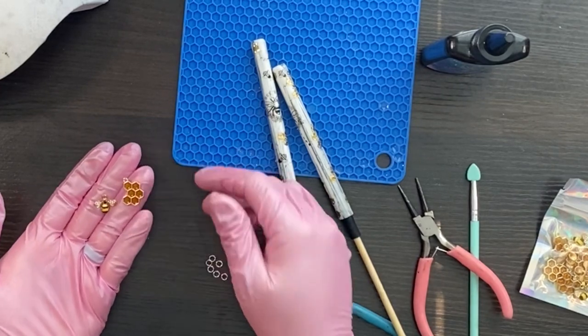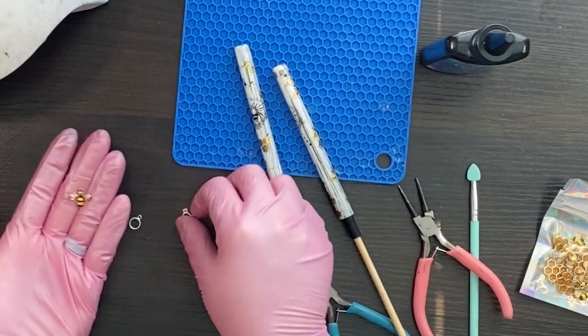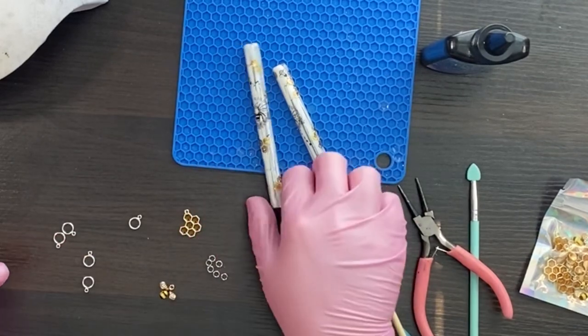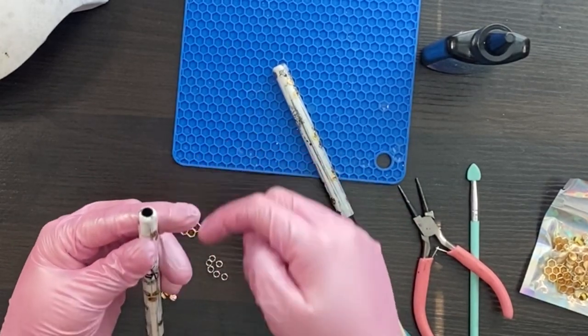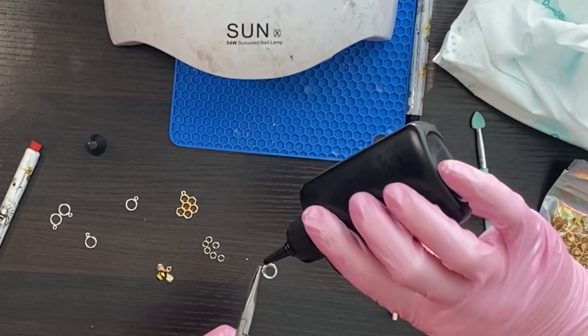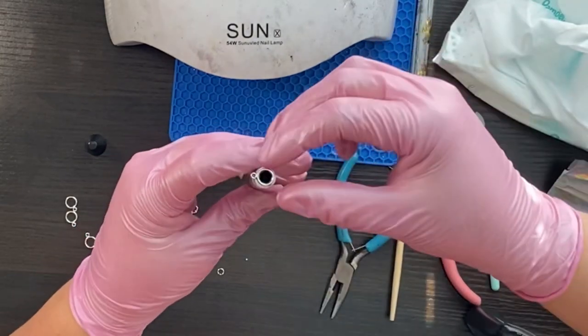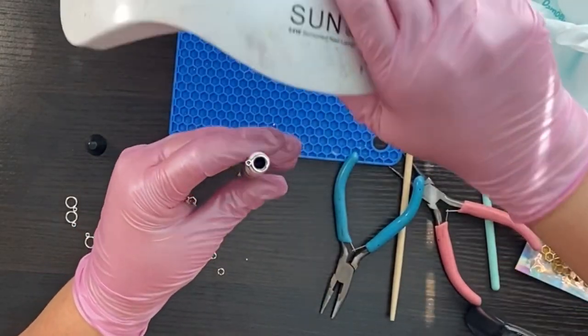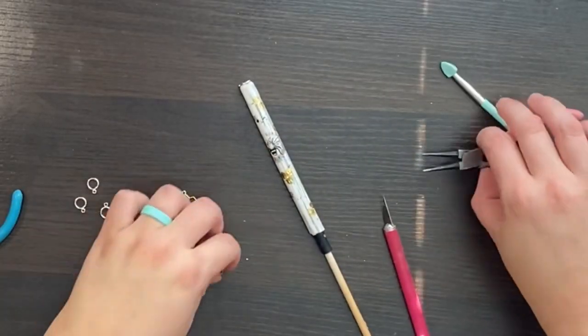I also got on Amazon these cute little honeycomb and honeybee charms. So how you get this toggle to attach to the top is you're going to add just a little bit of UV resin to that metal part and then attach it to the top of your pen and then cure it for three minutes before you start adding your jump rings and your charms to make sure it's fully attached.